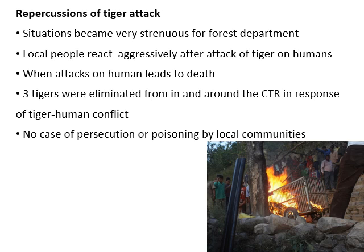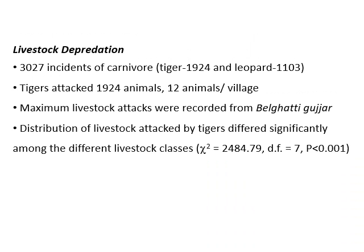The situation becomes very strenuous for the forest department when a carnivore attacks humans, as local people react aggressively — especially when attacks lead to death — and put pressure on the forest department to eliminate tigers. Three tigers were eliminated in and around Corbett Tiger Reserve in response to human-tiger conflict. No cases of persecution or poisoning by local communities in response to carnivore attacks were recorded during the study period.